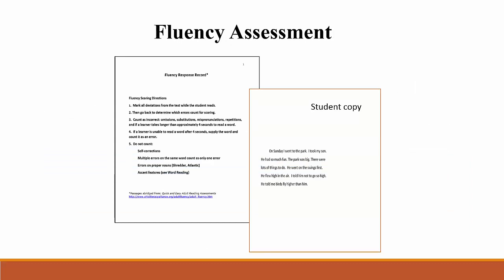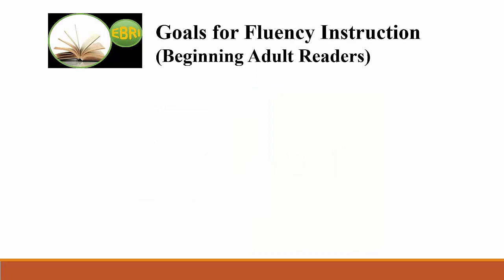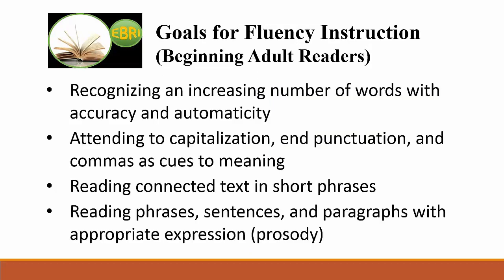Beginning adult readers — those reading between grade level equivalent 0 to 3.9 — need opportunities to develop their fluency. As you learned in the assessment course, the diagnostic assessment you give students upon entry into your class should help you tease out your instructional goals for beginning level students. Instructional goals for most students at the beginning level will involve the following: recognizing an increasing number of words with accuracy and automaticity; attending to capitalization, end punctuation, and commas as cues to meaning; reading connected text in short phrases; and reading phrases, sentences, and paragraphs with appropriate expression, or prosody. The rest of this course provides instructional approaches to achieve these goals.